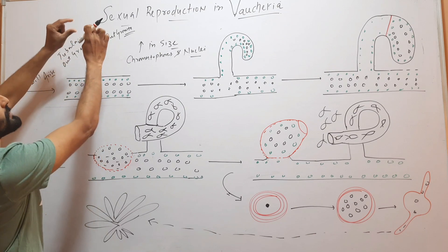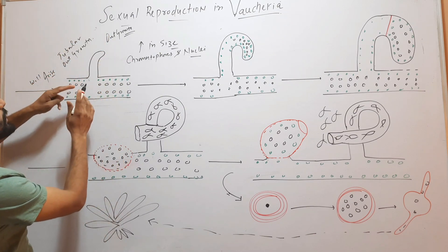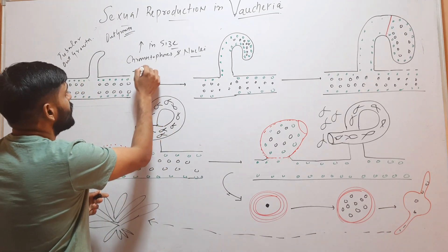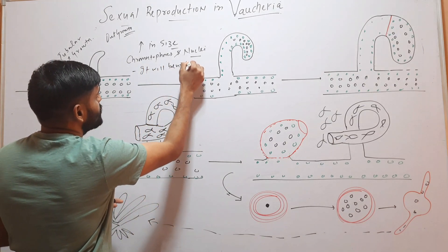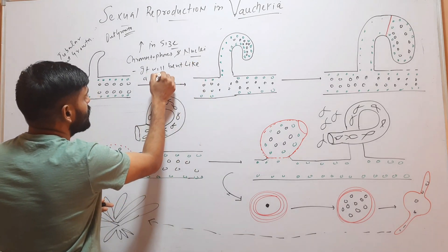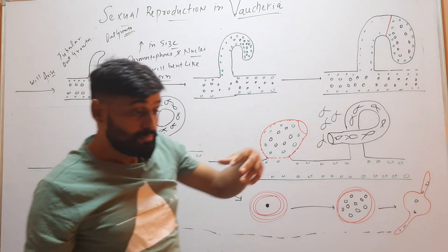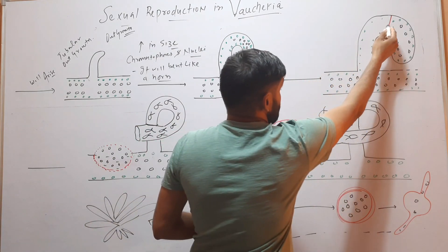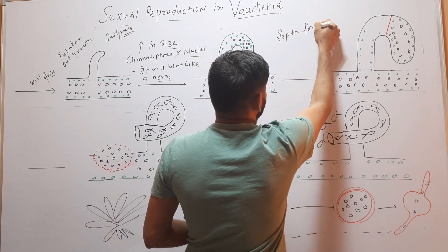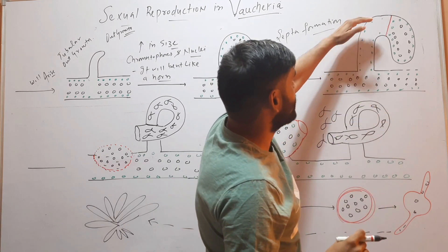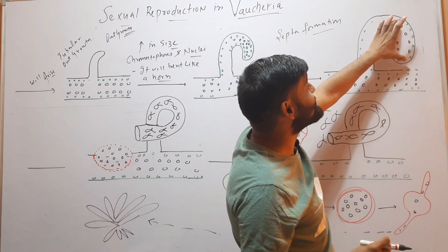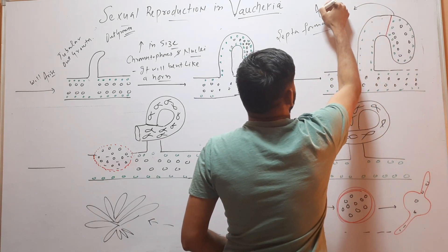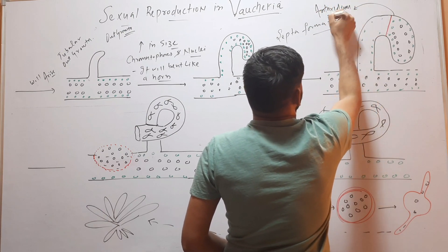When this structure grows to its maximum size, there will be a septa formation. This septum will separate this tubular structure from the rest of the filament. This separated region will now be called the Antheridium.